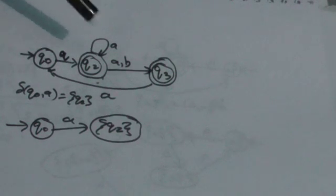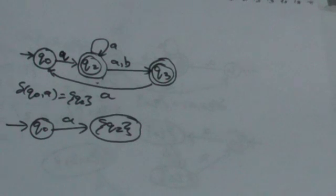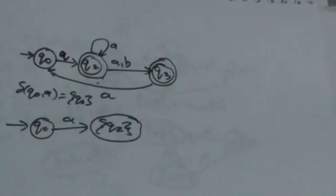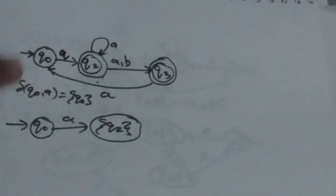Now we have to find the transition of Q0 for input symbol B. In this NFA there is no transition from Q0 for input symbol B, so we leave it. Now we have a new state Q2, and we have to find its transition for A and B.